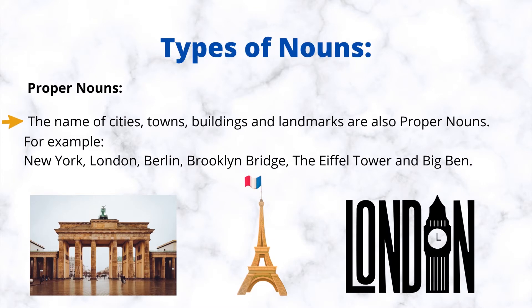Proper nouns: the name of cities, towns, buildings, and landmarks are also proper nouns. For example: New York, London, Berlin, Brooklyn Bridge, the Eiffel Tower, and Big Ben.